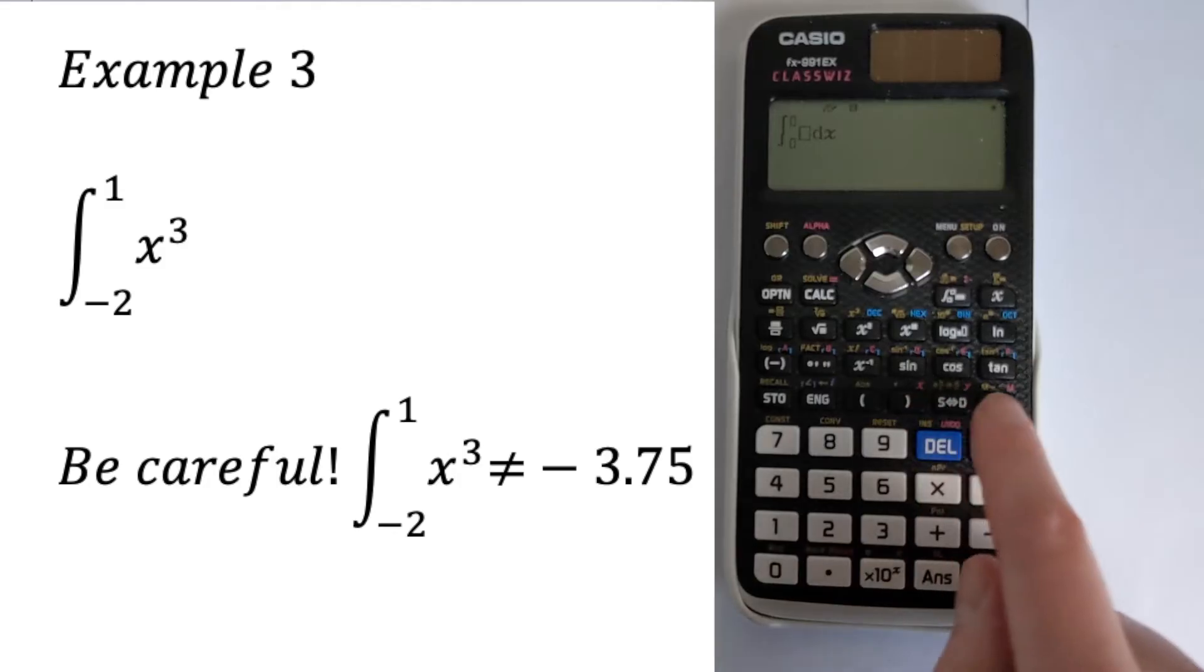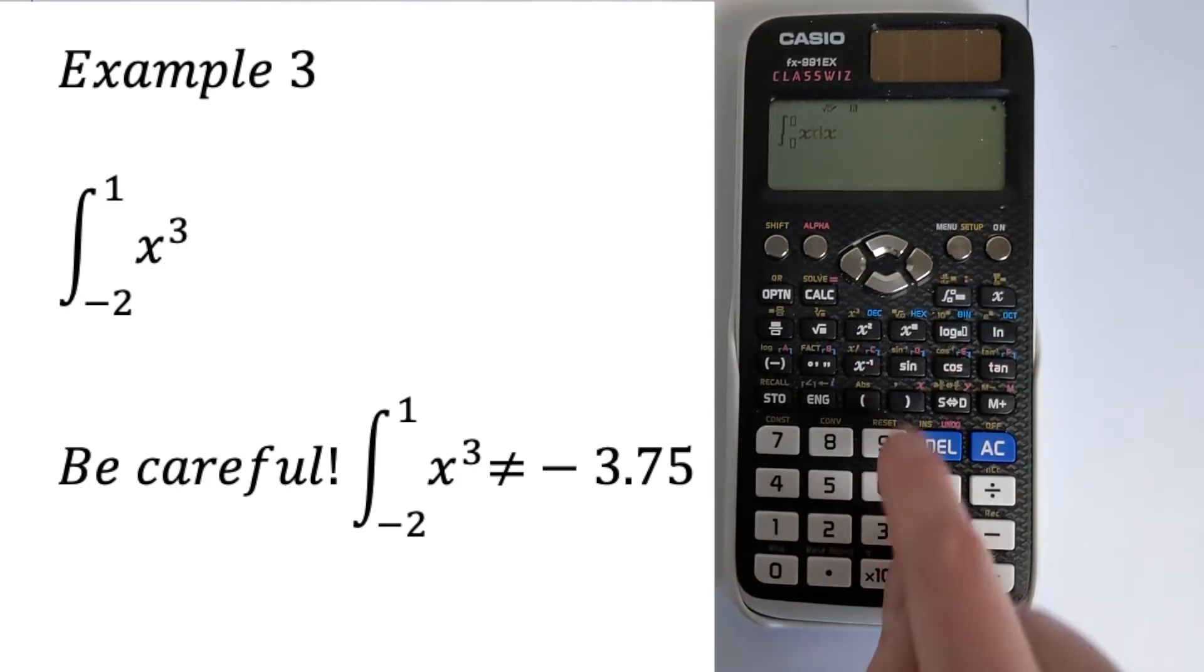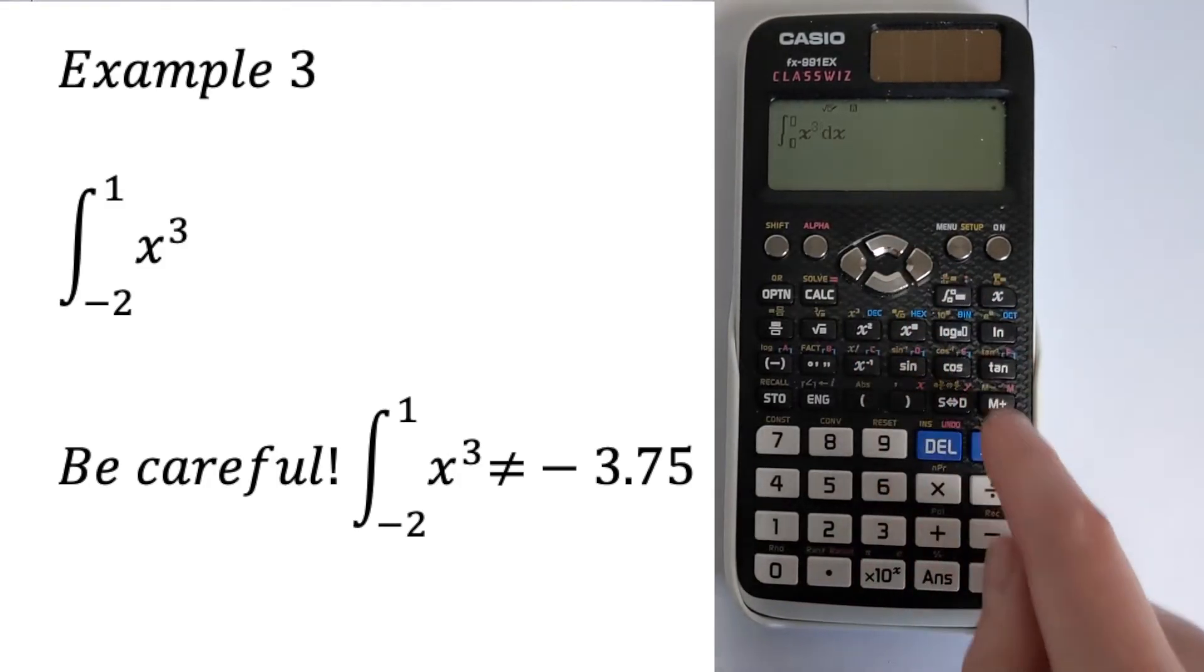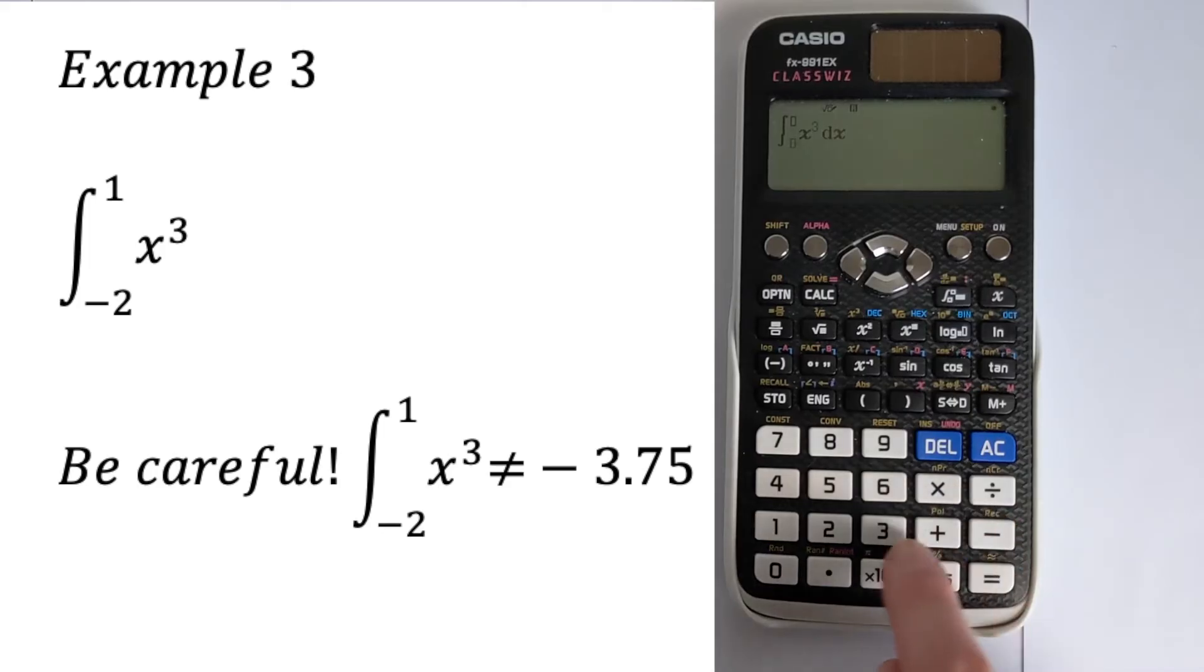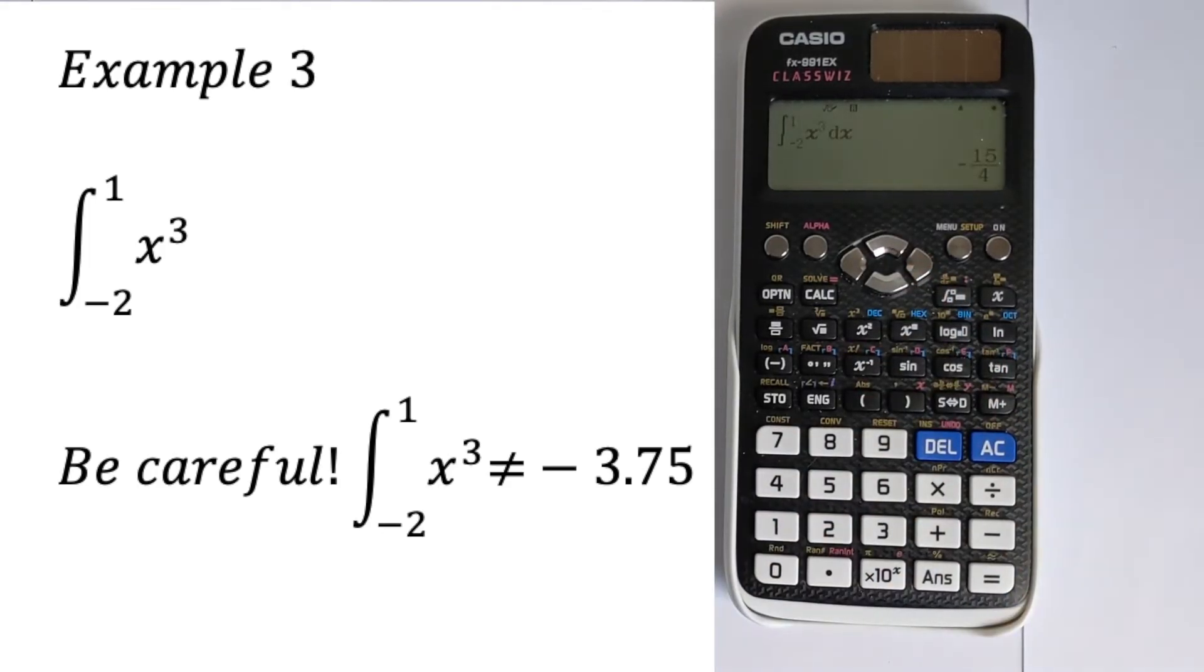So if we just do it the wrong way first. So we do x and then cubed. And we go say minus two up to one. This will give you an answer of minus 15 over four. And that's supposed to be the area of the graph between the x axis and the line. And well obviously an area can't be negative. So this is giving you the wrong answer. So this is where you have to pay attention.